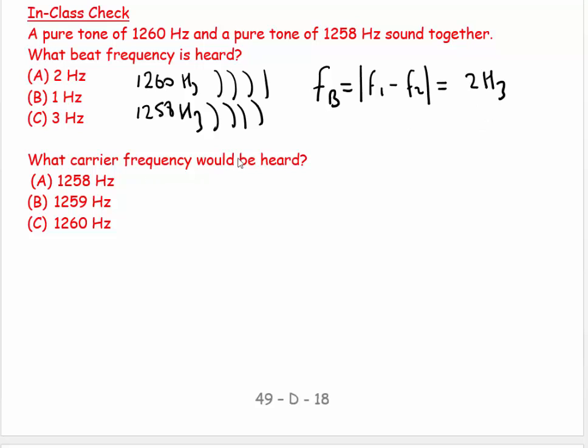What's the carrier frequency? What's the actual tone that you will hear? The carrier frequency equals f₁ plus f₂ divided by 2. It's the average. So you look at this and you get 1259 Hertz. There we have it.